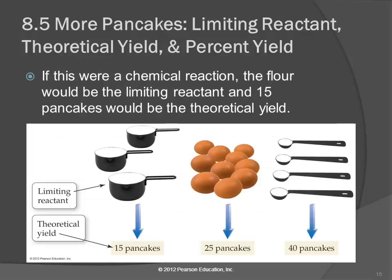So here's the picture. If this was a chemical reaction, we would say that the flour is the limiting reactant — it's the ingredient that limits how much we can make. And fifteen pancakes would be the theoretical yield. In theory, we could make fifteen pancakes.